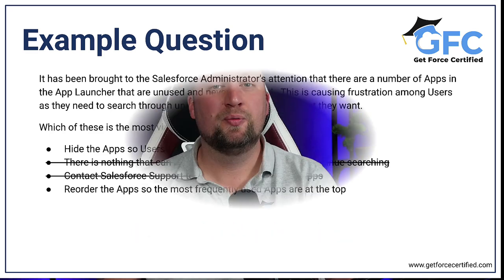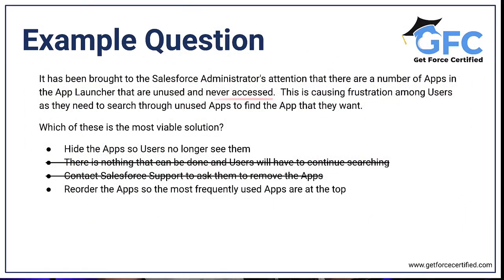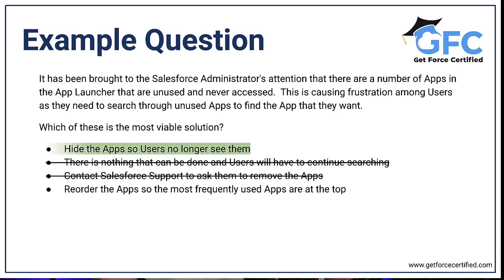At this point, we could take a look at the answers that we have left and pick the best one. We know that we could carry out these configurations, so it's all about picking the best answer for the question. We want to choose a solution that's going to have the biggest impact on users with an acceptable amount of configuration and maintenance. The question mentions that a number of apps in the app launcher are unused and never accessed, so if they are never used or accessed, we can remove them rather than just reorder them, so we can rule out answer number four. That leaves us with only one answer: hide the apps so users no longer see them.